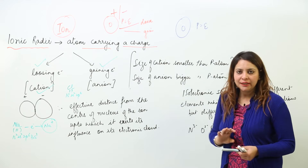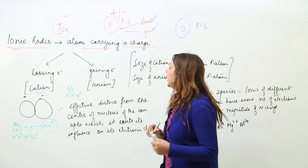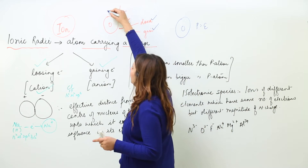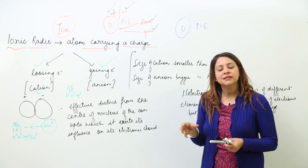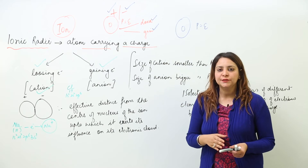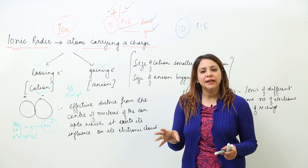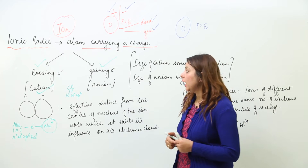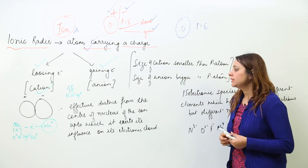Whenever an atom loses or gains an electron, it acquires a charge. There can be two types of charges — positive or negative. So atom is otherwise neutral, but whenever it loses or gains an electron it becomes an ion. It acquires a charge, and the atom with a charge is called an ion.